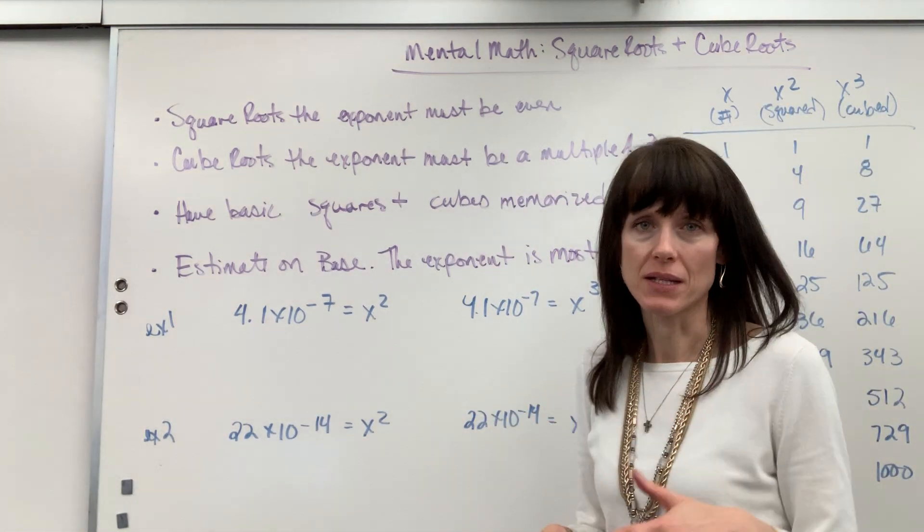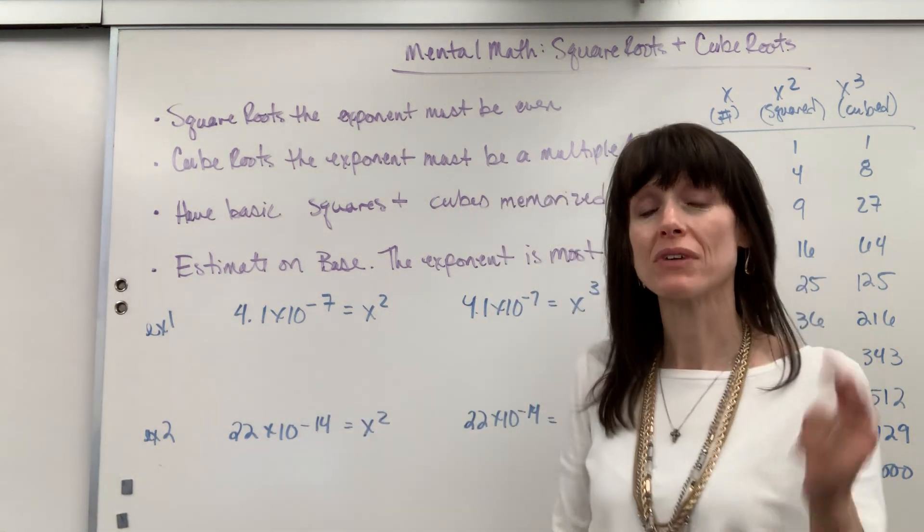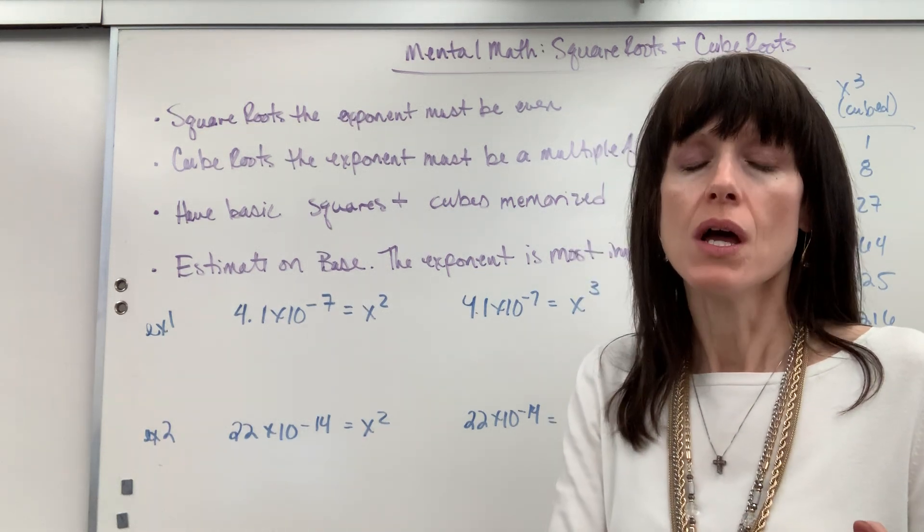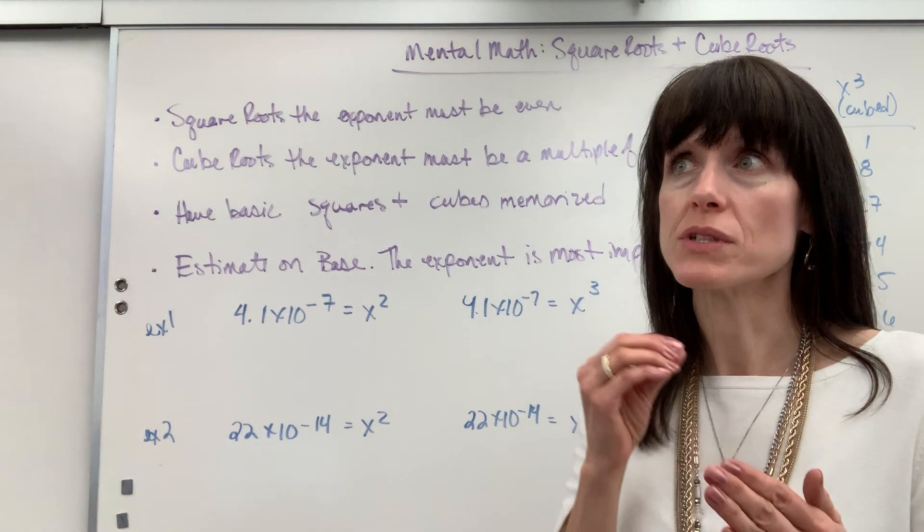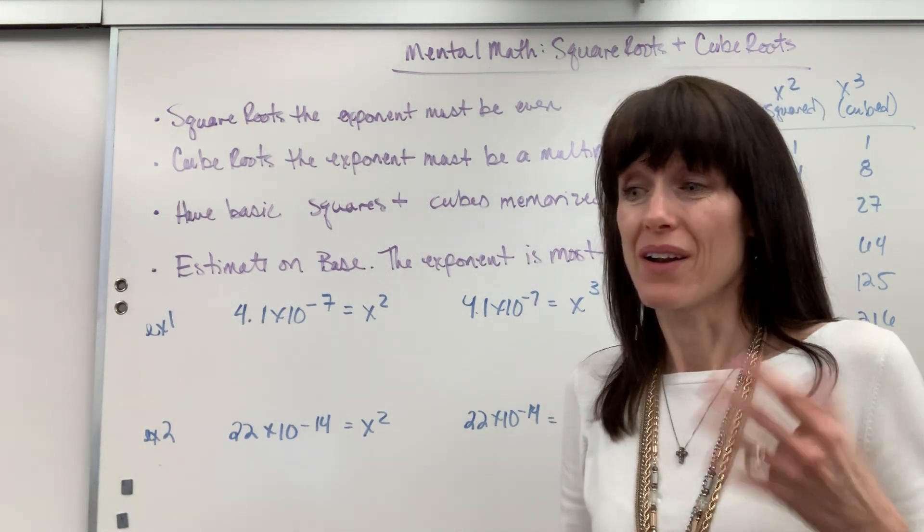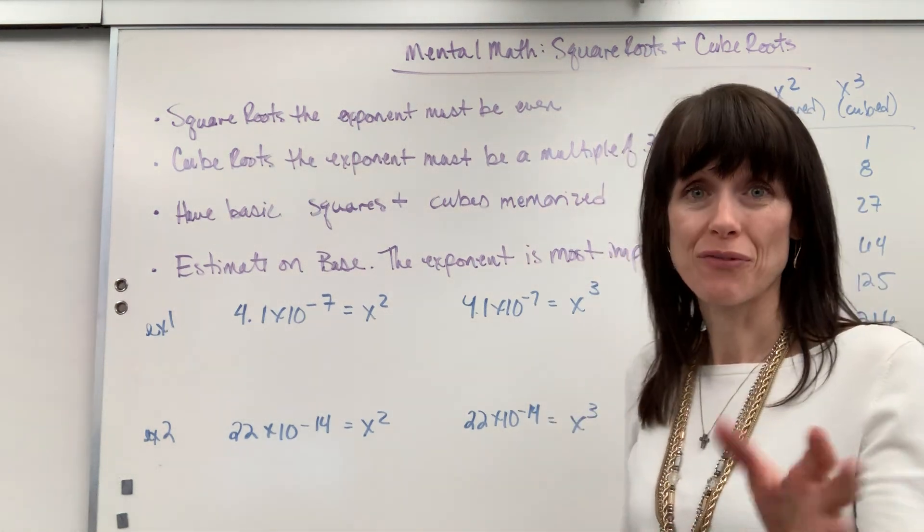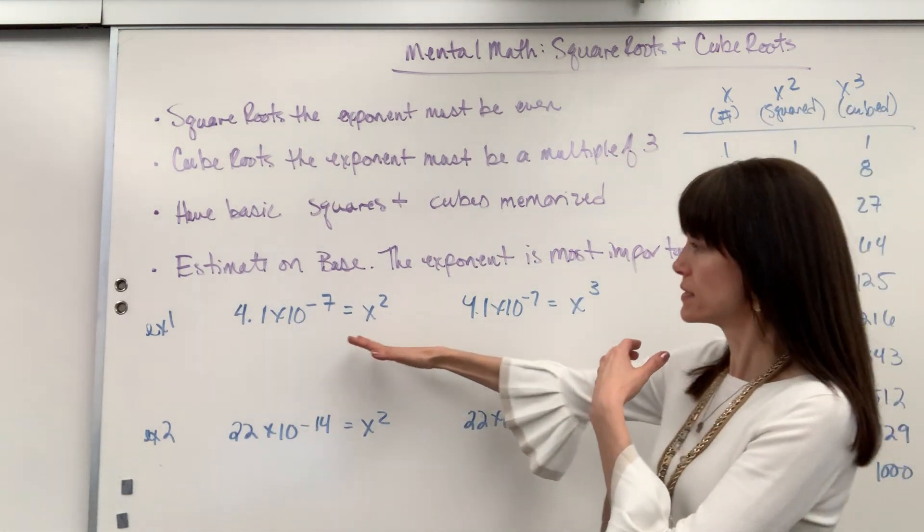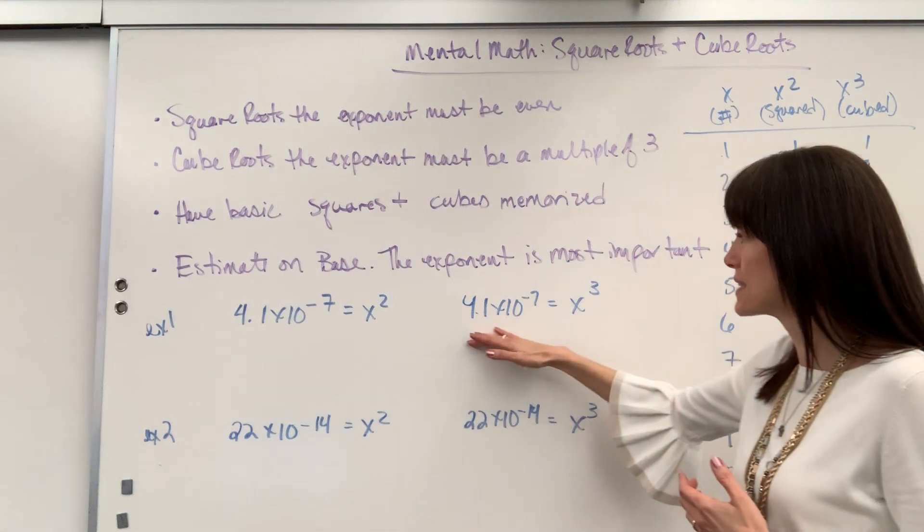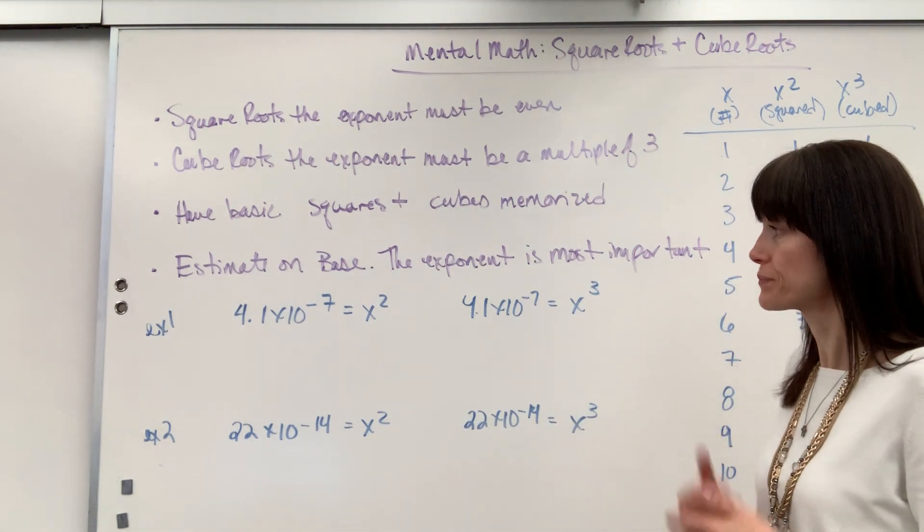Next, estimate on the base. So it's going to be this number that I'm talking about, the base. Estimate on that. Really, the crucial part of the answer is the exponent because it's showing the place value. So the exponent is the most important part of your answer. Let me say that again - the exponent is the most important part of your answer. And honestly, the exponent is the easy part of the answer.